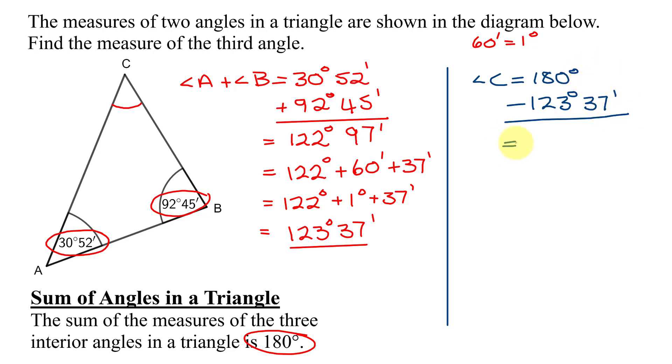So, I'm going to have to borrow a degree from 180 degrees. 180 minus 1 is 179 degrees. And the degree I borrowed, I'm going to write as 60 minutes. Now, I can subtract 123 degrees, 37 minutes.